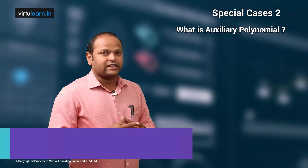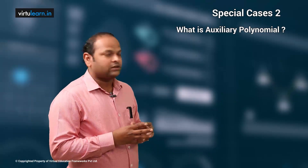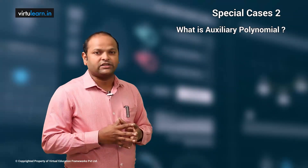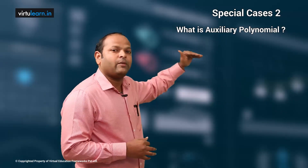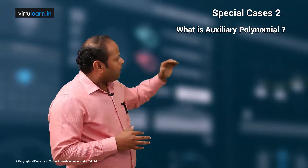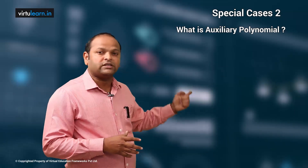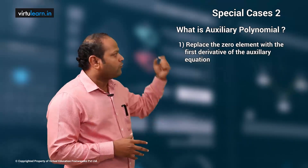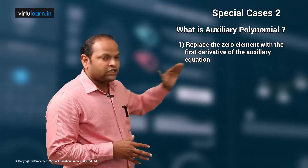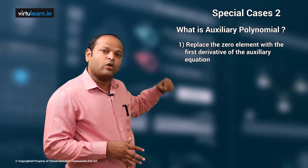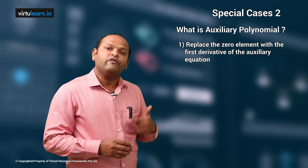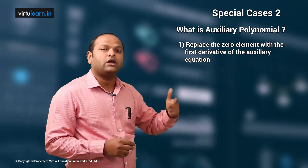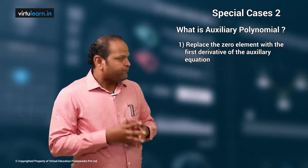Once you form the auxiliary equation A(S), you find its first derivative, dA/dS = 0. The coefficients of dA/dS are then used to replace the zero elements in the all-zero row. This way, the zero elements are replaced with the coefficients of the derivative of the auxiliary equation, which was formed from the row just above the all-zero row.